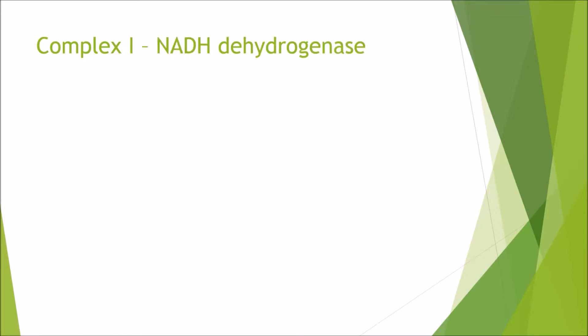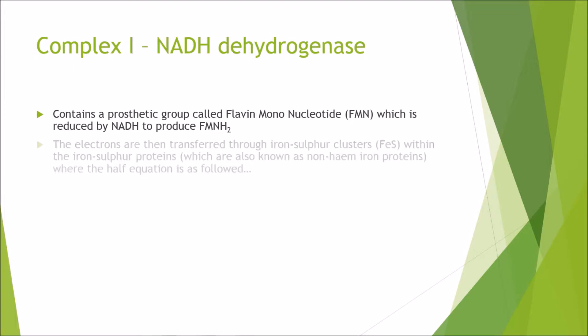We're going to start off talking about complex 1, which is NADH dehydrogenase. This contains a prosthetic group called flavin mononucleotide, abbreviated to FMN, which is reduced by NADH to form FMNH2. The electrons are then transferred through iron-sulfur clusters, FeS, within the iron-sulfur proteins, which are sometimes known as non-heme iron proteins, where the half-equation is as followed. We've got the ferric ion Fe3+, which then adds on an electron to give yourself the Fe2+ ion, and this can go forwards and backwards, so this is a reversible reaction.